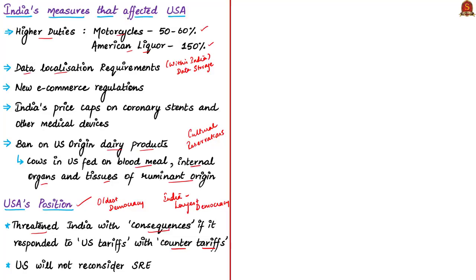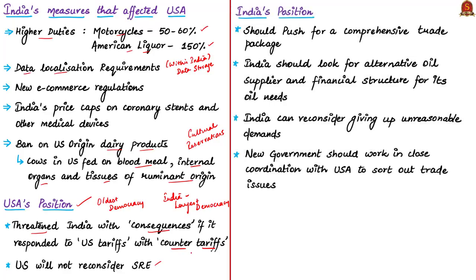Also, there is no chance that USA will again extend the Significant Reduction Exemptions given to few countries including India. Regarding India's position, India should continue pushing for a comprehensive trade package. India should look for an alternative oil supplier and an alternative financial structure to meet its oil needs. This editorial also suggests that India can reconsider its decision and give up some unreasonable demands. The new government to be formed should work in close coordination with USA to sort out the ongoing trade issues.